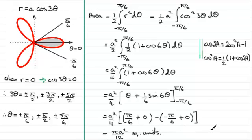Okay, so I hope that's given you an idea how to find the area of a loop.